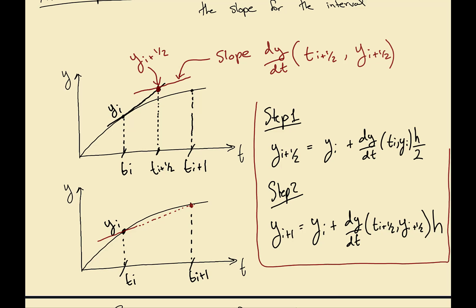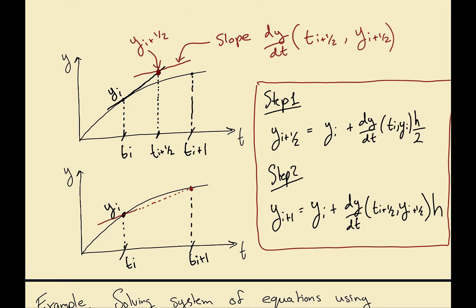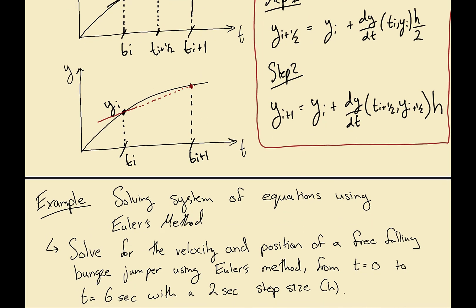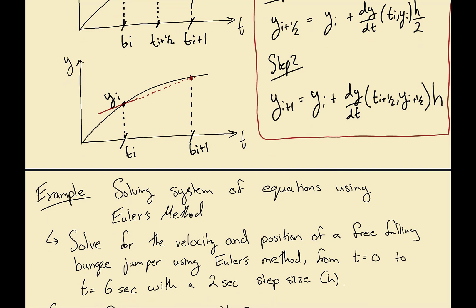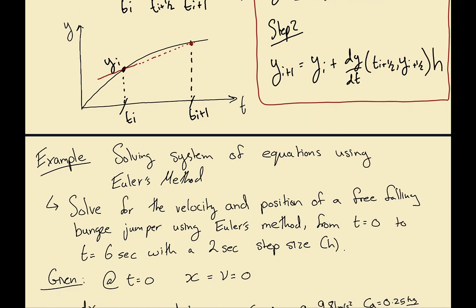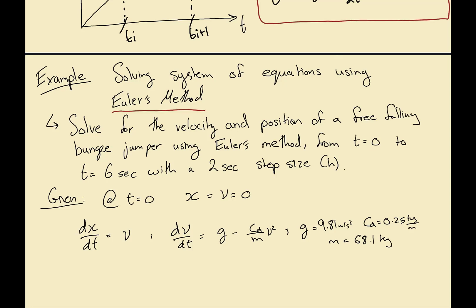That is the midpoint method. Now we'll do an example. The example is actually solving a system of equations, not just one equation — a bit more complex than before, but still not too complicated. The goal here is to use Euler's method — not midpoint, not modified — to find the velocity and position of a free-falling bungee jumper. We have conditions at time zero and want values at time equals six seconds.